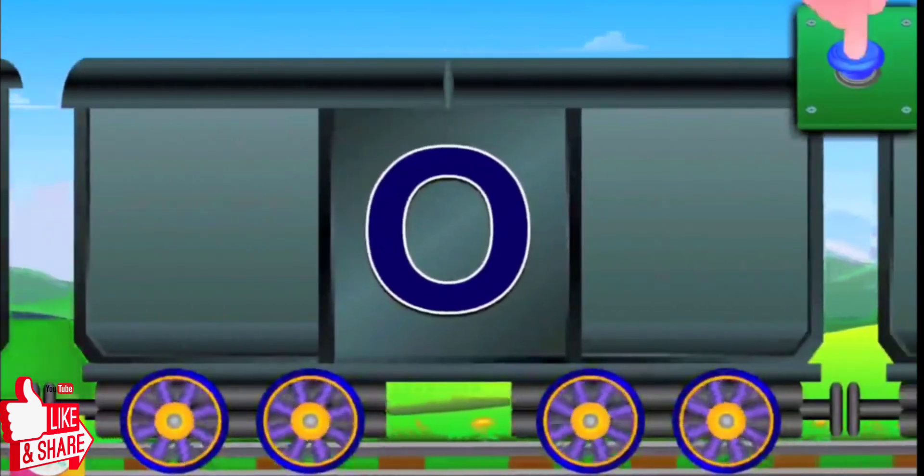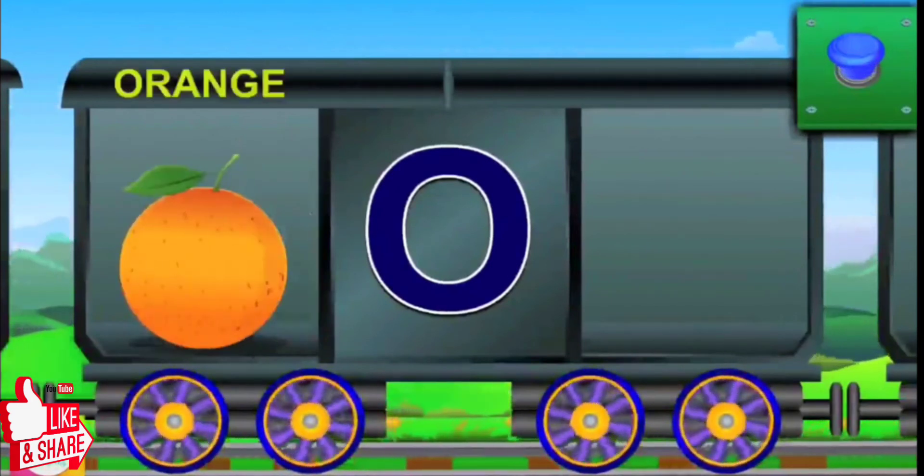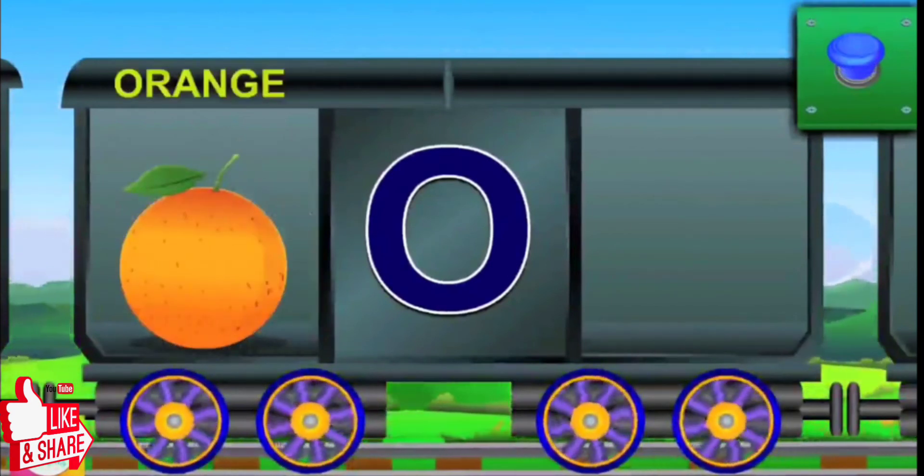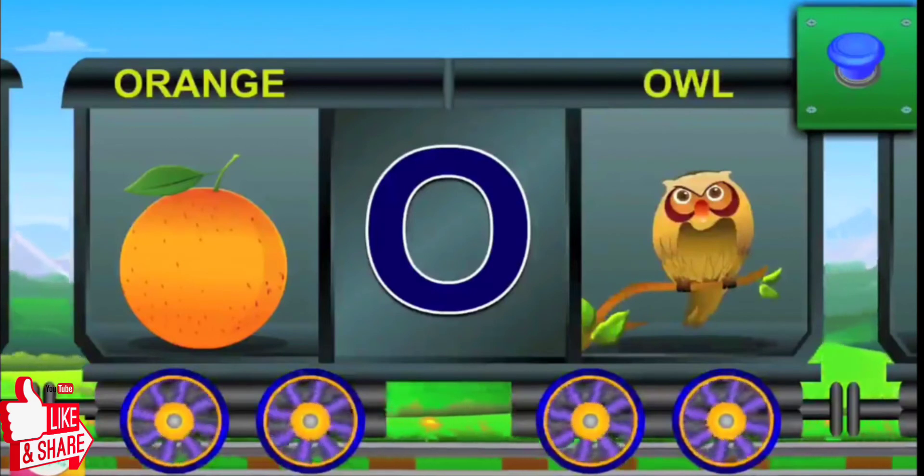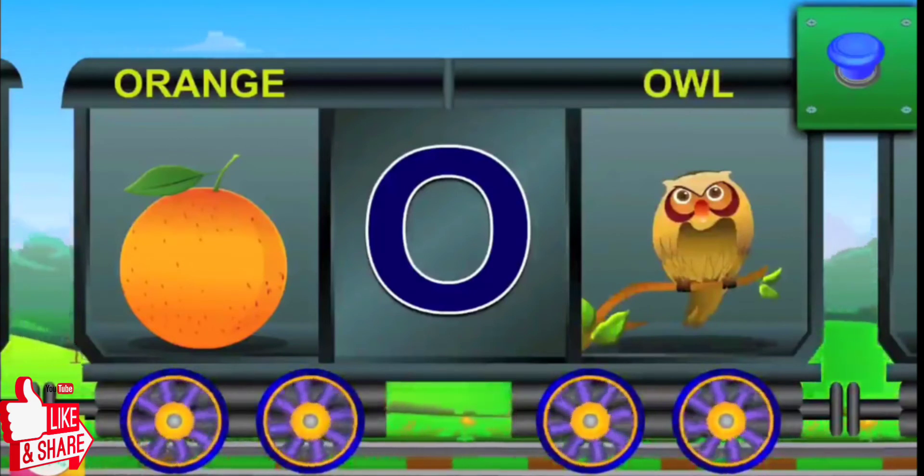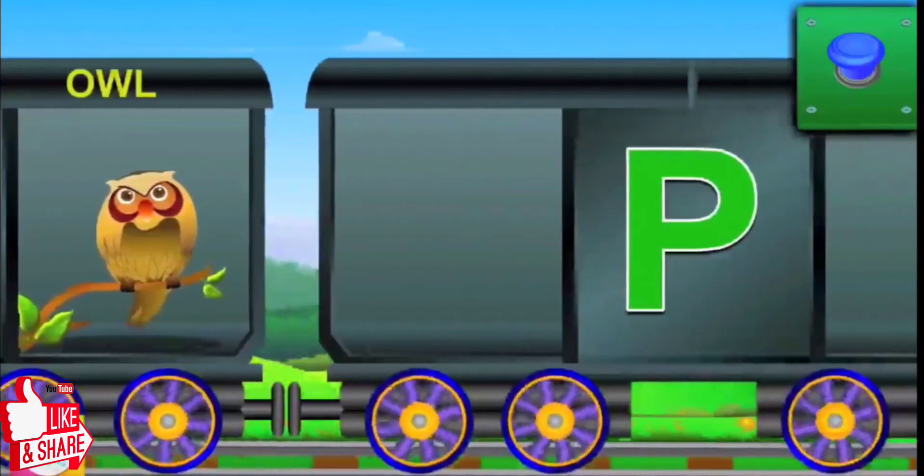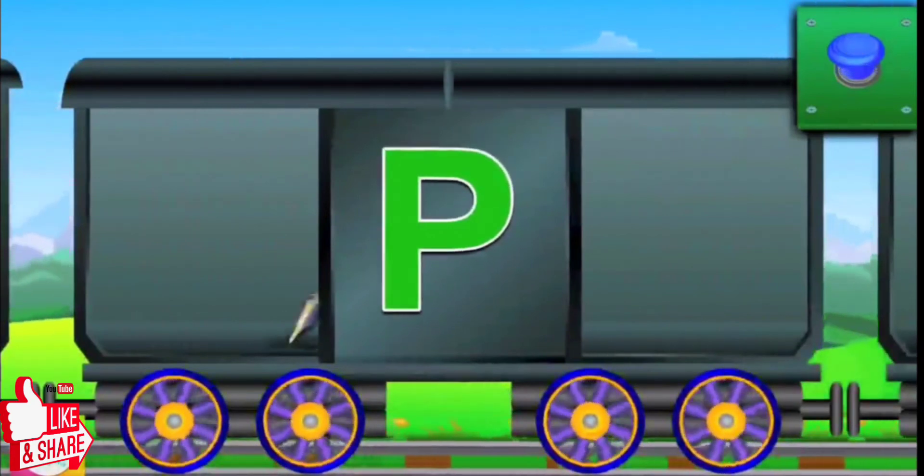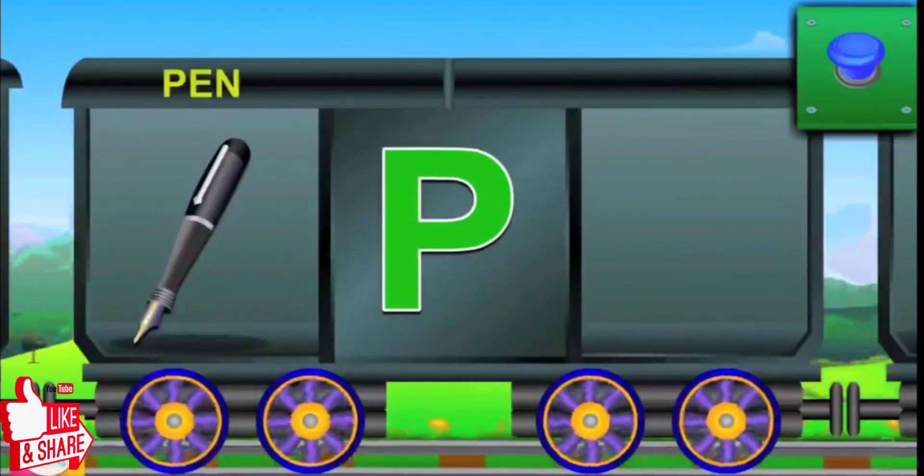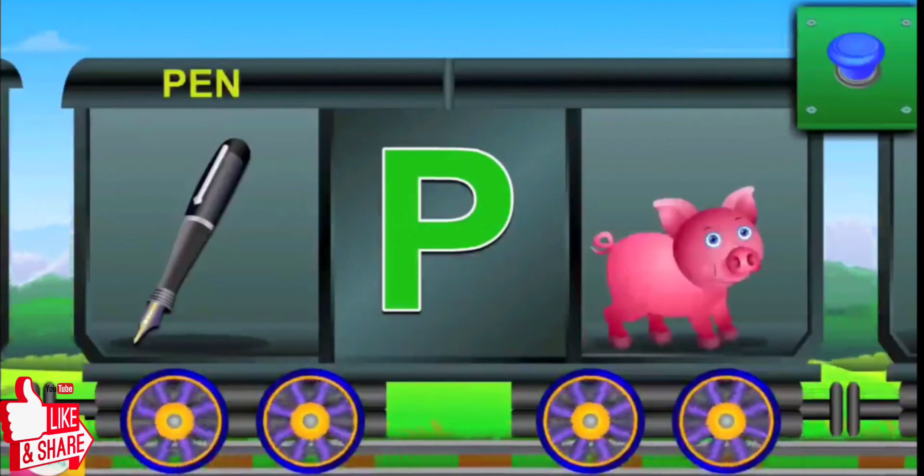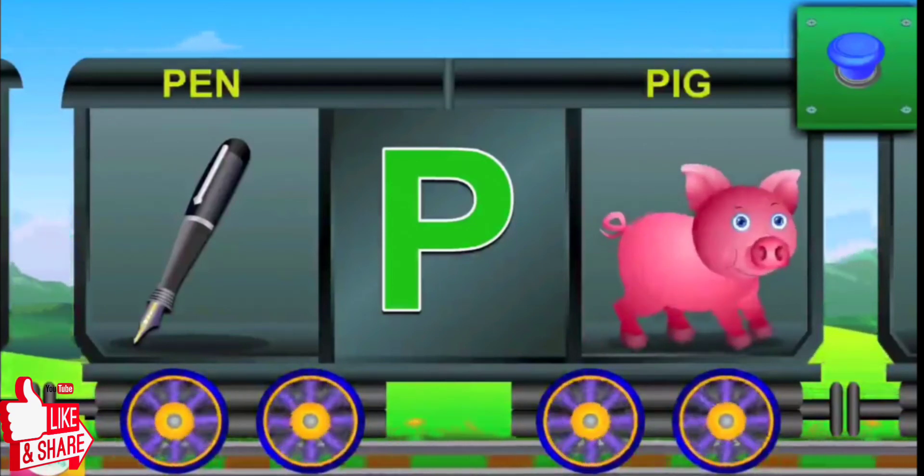Meet O. O for orange, and the orange is round. O for owl, and the owl wakes at night. Here comes P. P for pen, and the pen is black. P for pig, and the pig is big.